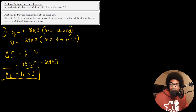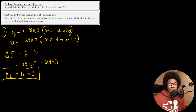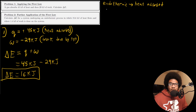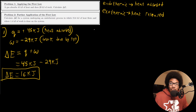Problem two says: calculate delta E for a system undergoing an endothermic process in which 15.6 kilojoules of heat flows and where 1.4 kilojoules of work is done on the system. Endothermic is when heat is absorbed by the system. By contrast, exothermic is where heat is released by your system. Now that we have those two definitions, we have everything we need to interpret this problem.